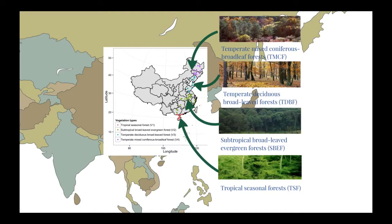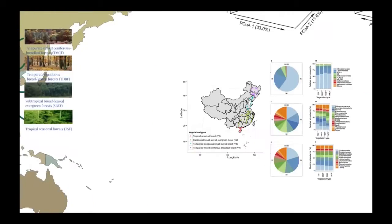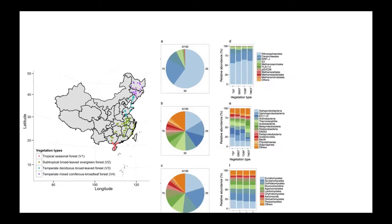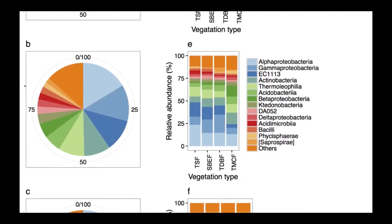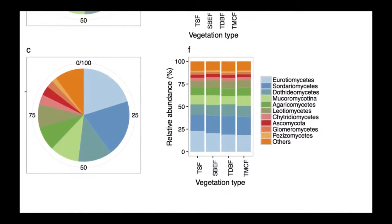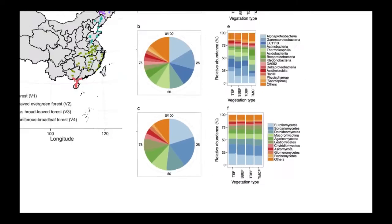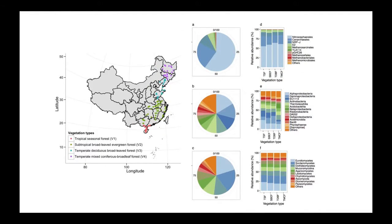We sequenced the biomarkers for the archaea, bacteria, and fungi. The results showed that the taxonomic groups had different trends along the vegetation gradient.